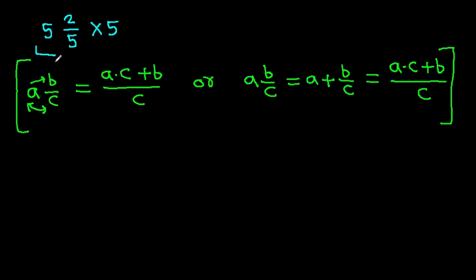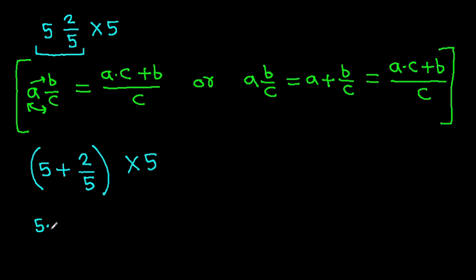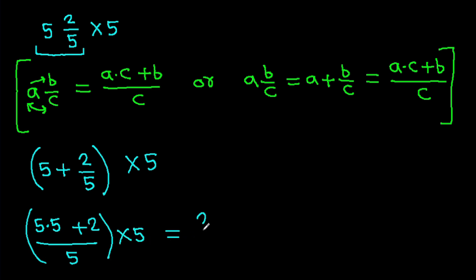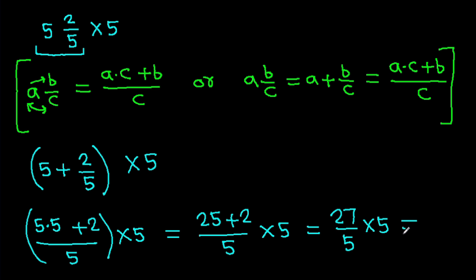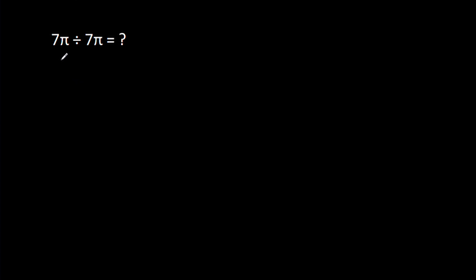So 5 and 2 over 5 equals 5 plus 2 over 5, which means 5 times 5 plus 2, all over 5, times 5. That is 25 plus 2 over 5, times 5, which is 27 over 5, times 5 — and that gives 27. So the answer is 27.